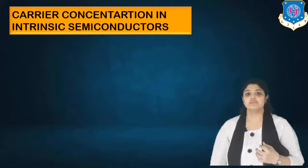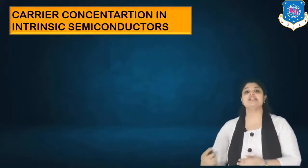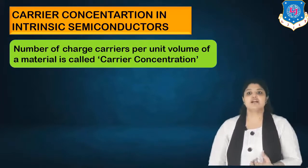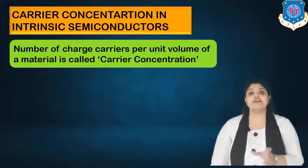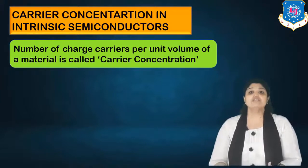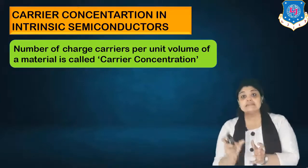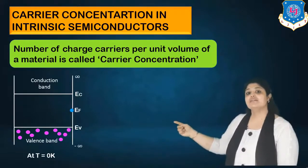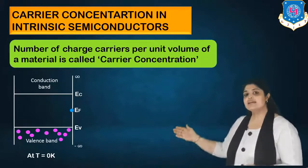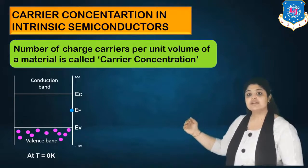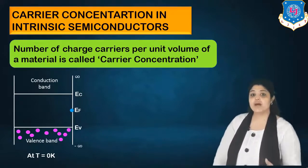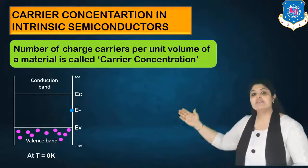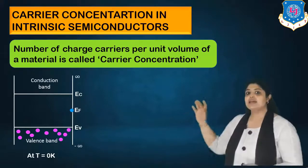The number of charge carriers per unit volume of a material is known as carrier concentration. The first diagram shows the temperature considered is 0 Kelvin. At 0 Kelvin, the valence band is filled with electrons and the conduction band is empty. This is because in semiconductors there is a forbidden gap in between, so all electrons are present in the valence band while the conduction band is empty.